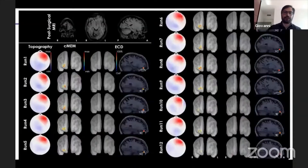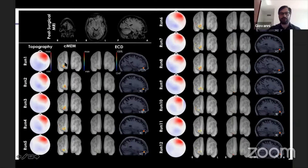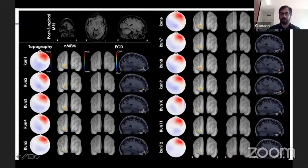Here is another example — a patient who became seizure-free after surgery involving the right frontal pole. This shows that MEG results can be very consistent. You keep recording over one hour to one and a half hours, averaging spikes recorded every five to six minutes, and the results are very good, almost always.